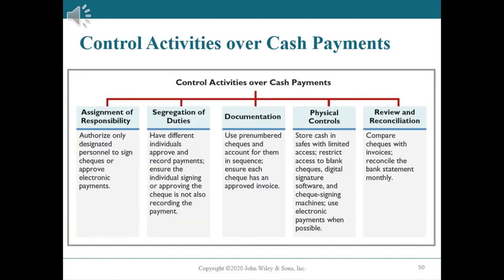Control activities over cash payments include: assignment of responsibility — authorize only designated personnel to sign checks or approve electronic payments; segregation of duties — have different individuals approve and record payments, ensuring the individual signing the check is not also recording the payment; documentation — use pre-numbered checks and ensure each check has an approved invoice; physical controls — store cash in safes with limited access, restrict access to blank checks and digital signature software, and use electronic payments when possible; and review and reconciliation — compare checks with invoices and reconcile the bank statement monthly.